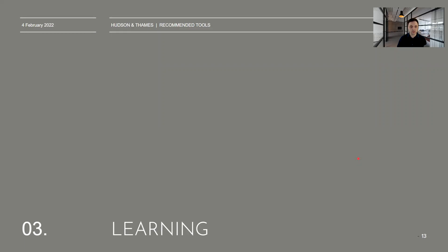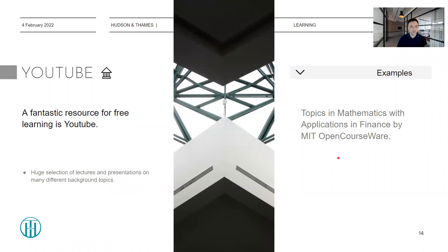Let's move on to the final section, which is learning. Often when you are looking at a research topic or trying to break into a new research field, there are some skills you might need to learn. A very well-known example worth mentioning is YouTube, which has a fantastic repository of free online learning material that anyone can access. For a good example, I would recommend looking at the Topics in Mathematics with Applications to Finance course by MIT OpenCourseWare, which is freely available on the OpenCourseWare site and also on YouTube. There are many other different topics you can explore for free on YouTube.